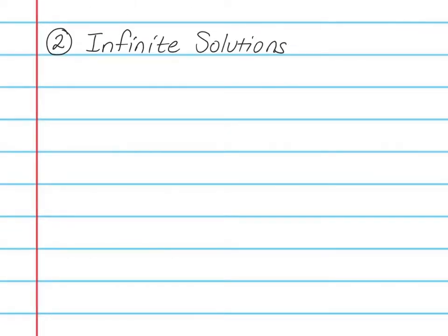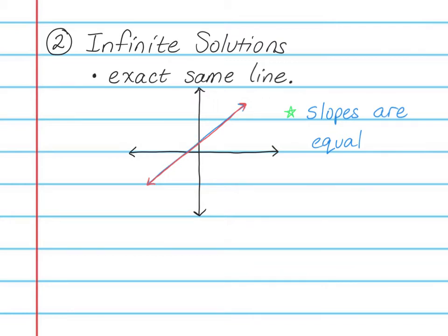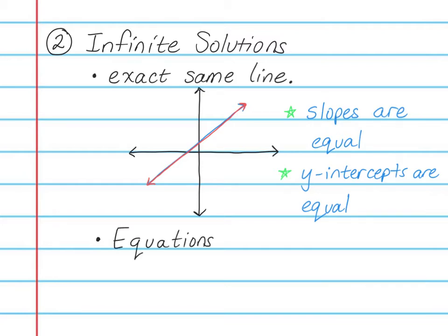The second type of special systems is infinite solutions. This happens when you have the exact same line. On a graph, you'll have a line and then another line that is exactly the same — both heading in the same direction with the same steepness, meaning they have the exact same slope. The lines also cross the y-axis at the same spot, so the y-intercept is also exactly the same. It's easy to see infinite solutions on a graph, but how do you tell if the lines are the same just from the equations?